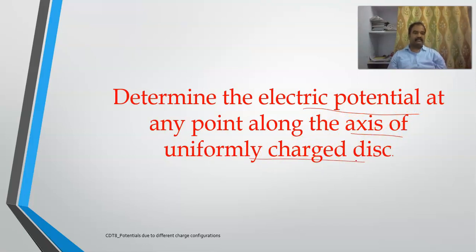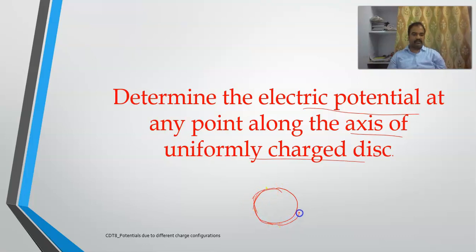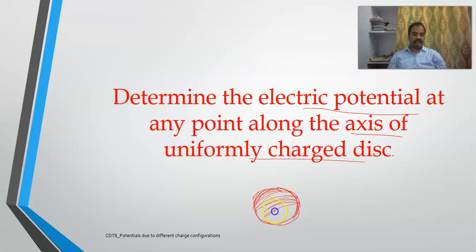We have seen in the last classes the difference between a shell and a disc. A shell is just like a circular ring where the charge is available only on the surface, whereas for a disc the charge will be uniformly distributed. We want to determine the electric potential at any point along the axis of this uniformly charged disc.